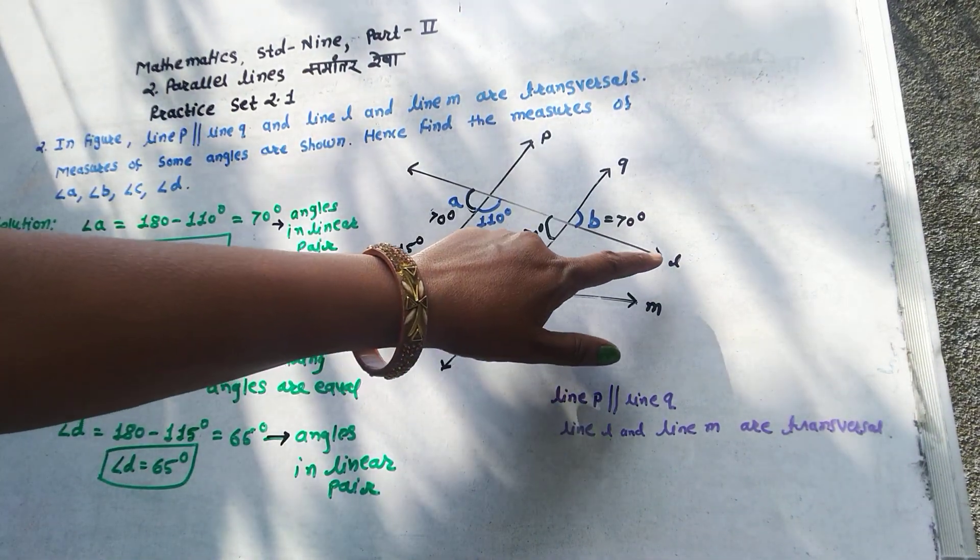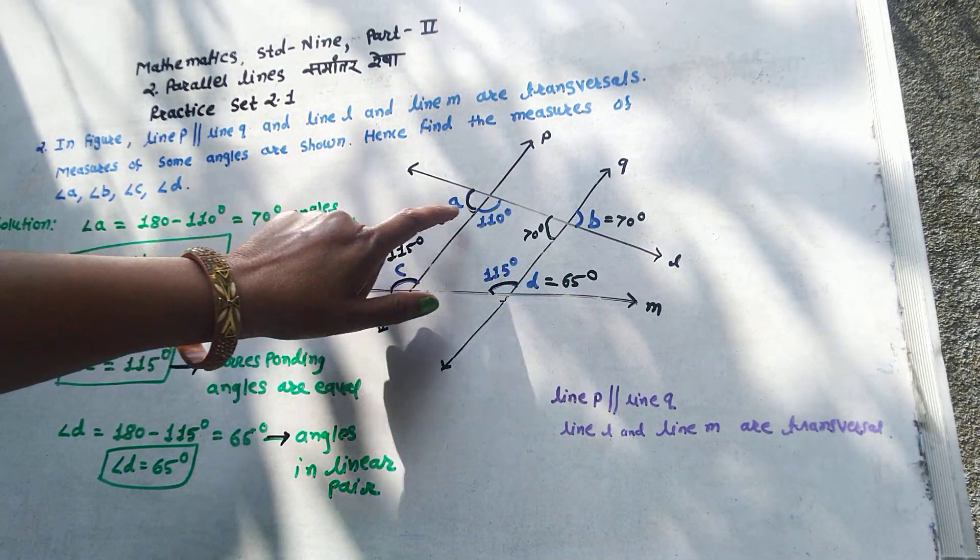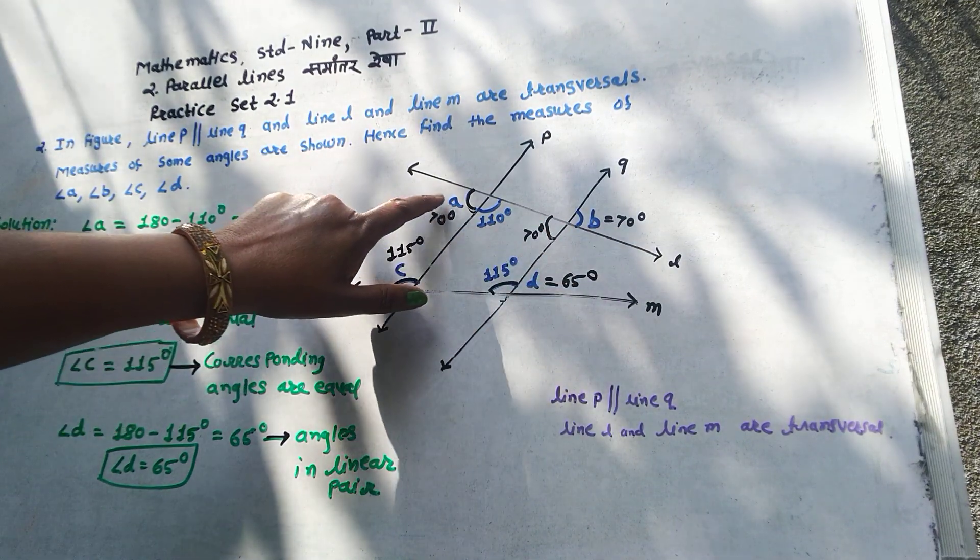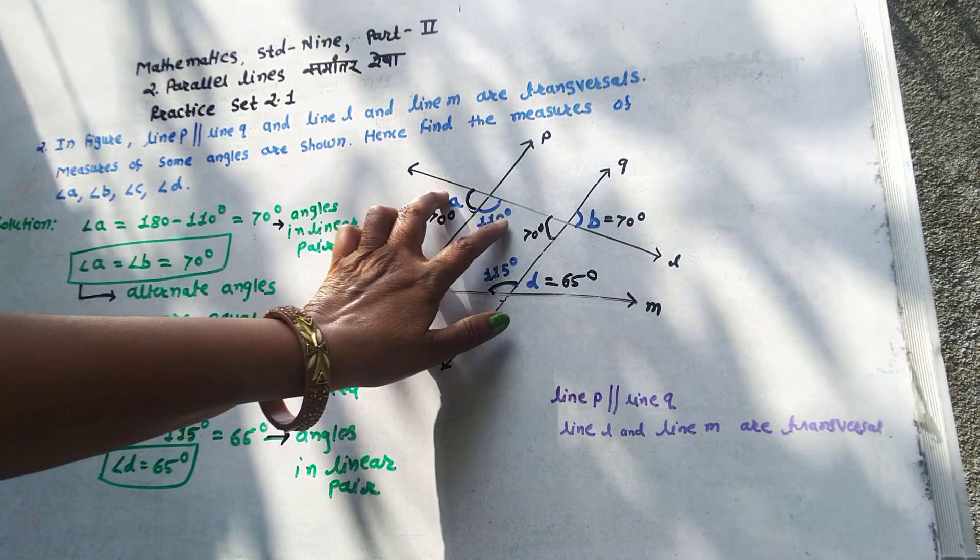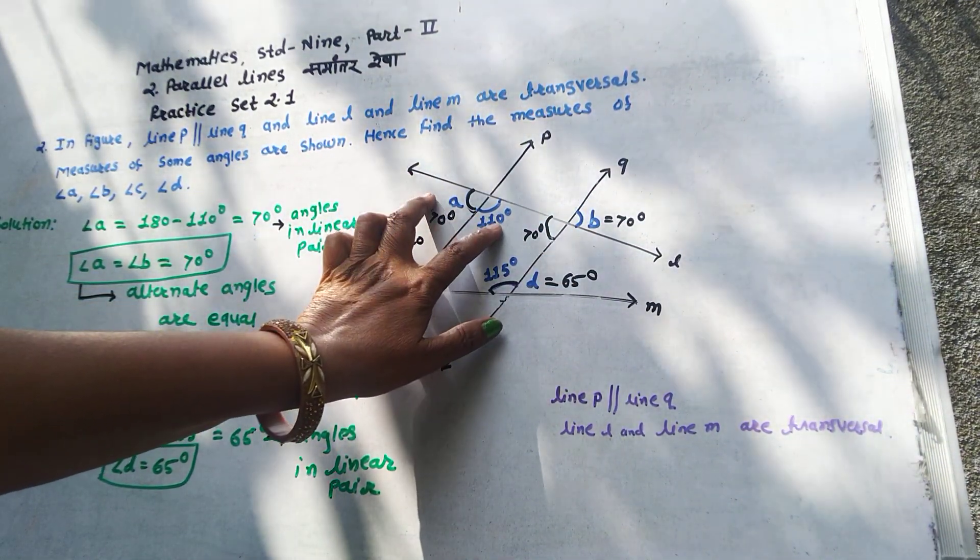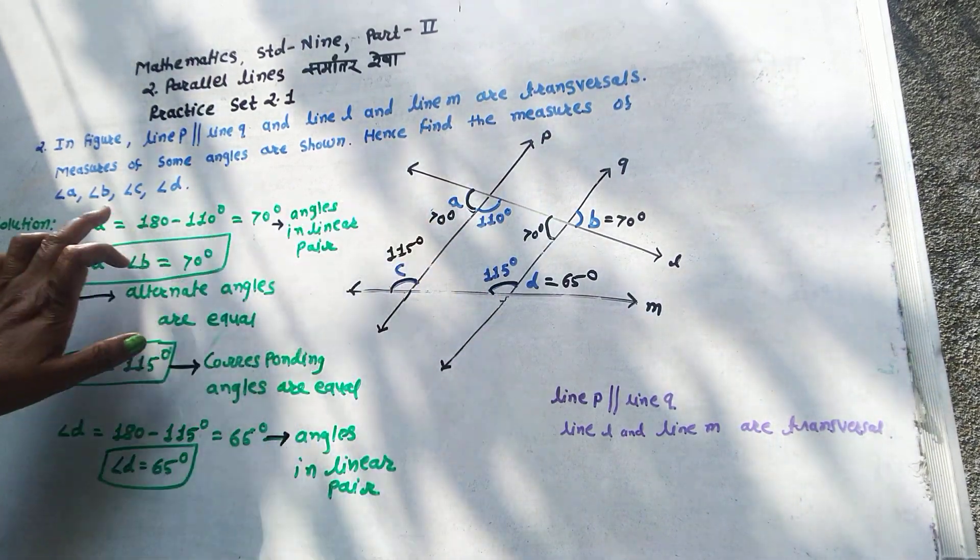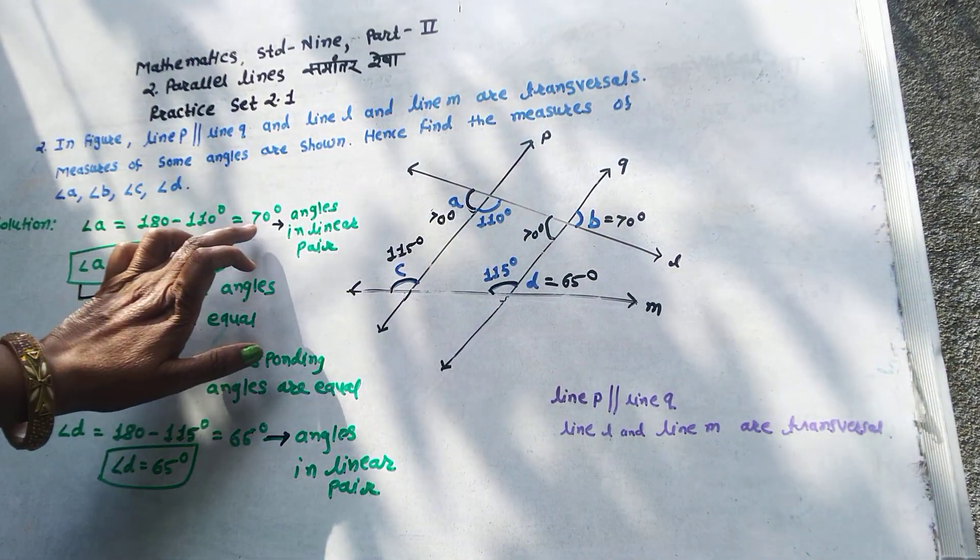Here, first consider transversal L. Due to this transversal, these two angles are in a linear pair. Therefore, the addition of these two is equal to 180 degrees. Therefore, angle A is equal to 180 minus 110 is equal to 70 degrees.